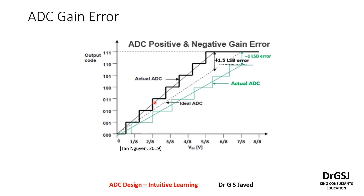If you look at the slope of the ADC graph, the bold black line is on the higher side and it saturates faster, meaning the gain is higher. Since the gain is higher, it reaches the output code faster. It does not take all eight steps it needs — it may reach there faster.